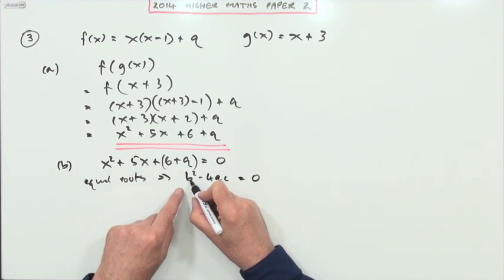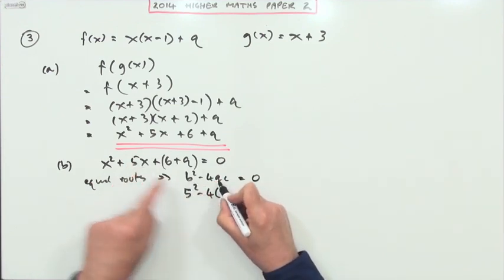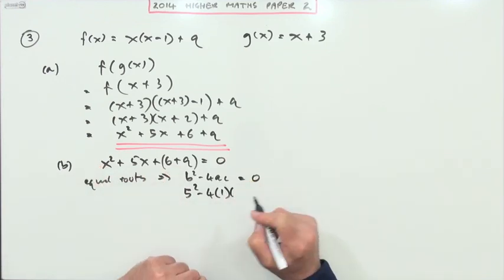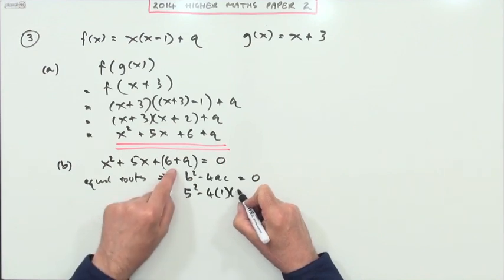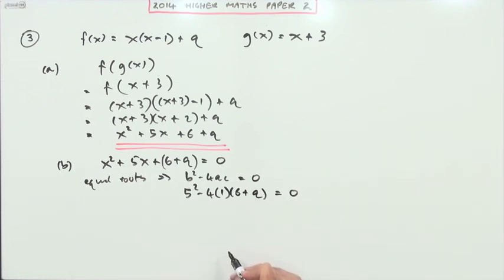So what's the discriminant? B is the coefficient of the x term, so that's a five squared minus 4 times a, the coefficient of the x squared, and c is the absolute coefficient, the constant at the end, that's the 6 plus the q, and that should equal zero. Well, that's just a real linear equation. It's only got a single q in it there.